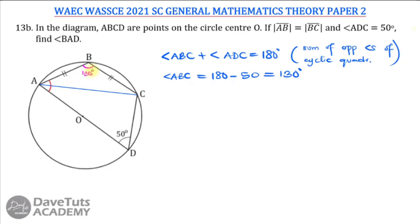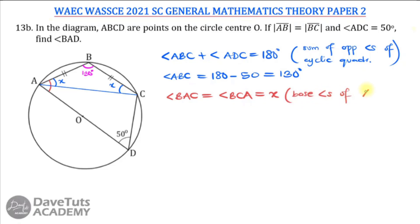Now that angle ABC is 130 degrees, I'll call the base angles of the isosceles triangle x. Angle BAC equals angle BCA, and I'm labeling both as x because they are the base angles of the isosceles triangle — a triangle with two equal sides has equal base angles.